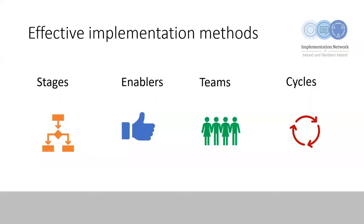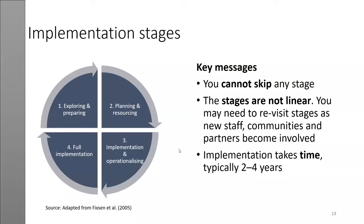The next section will go through some of the implementation methods that have been shown to be effective. We will go through the four stages of implementation, talk about enablers — also called levers or facilitators — implementation teams, and continuous improvement cycles. These stages are not linear and you may need to go back and forth throughout the process. Implementation takes time, and if you skip a stage, you will generally end up coming back to it.